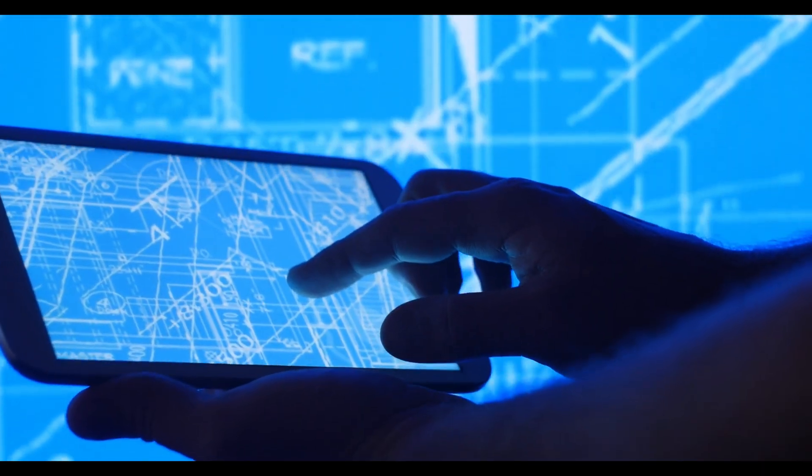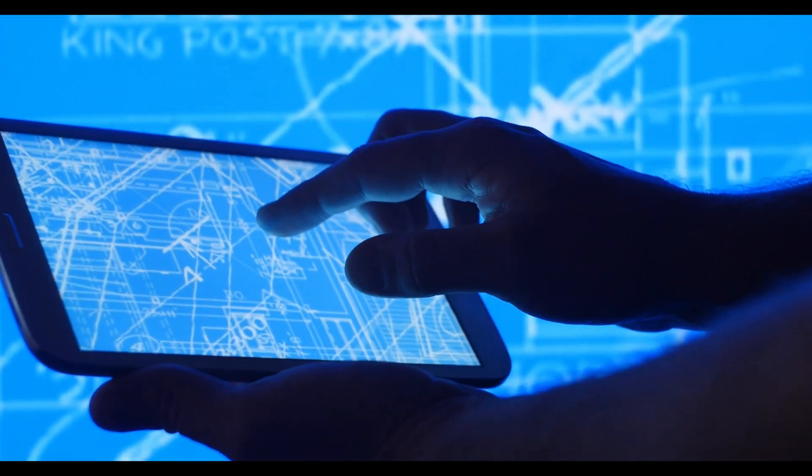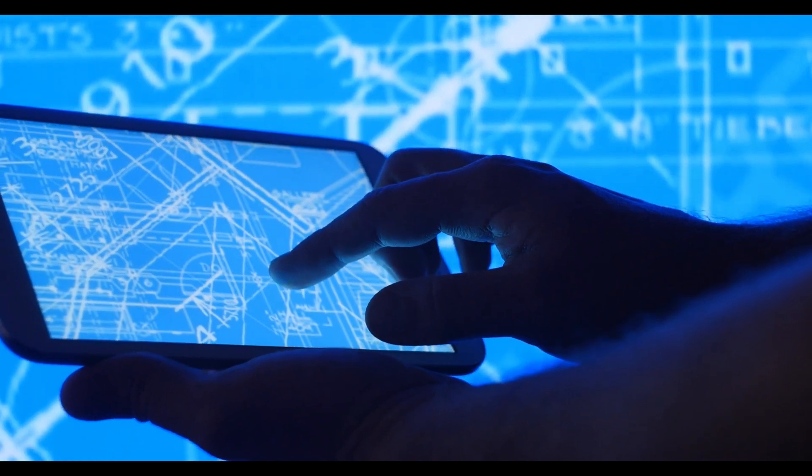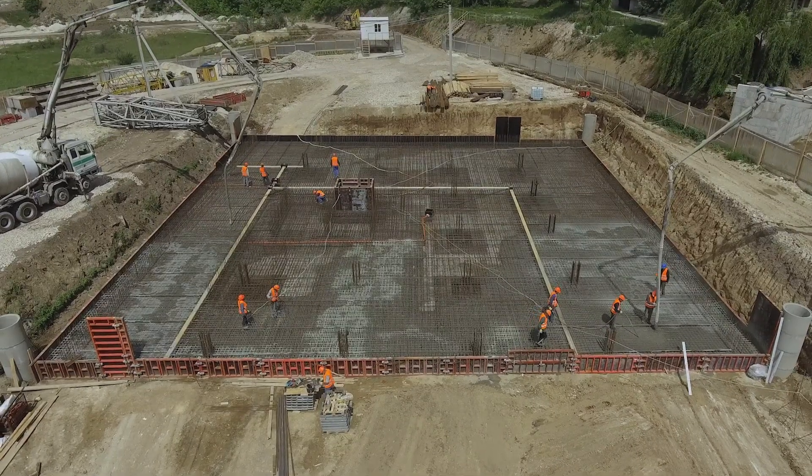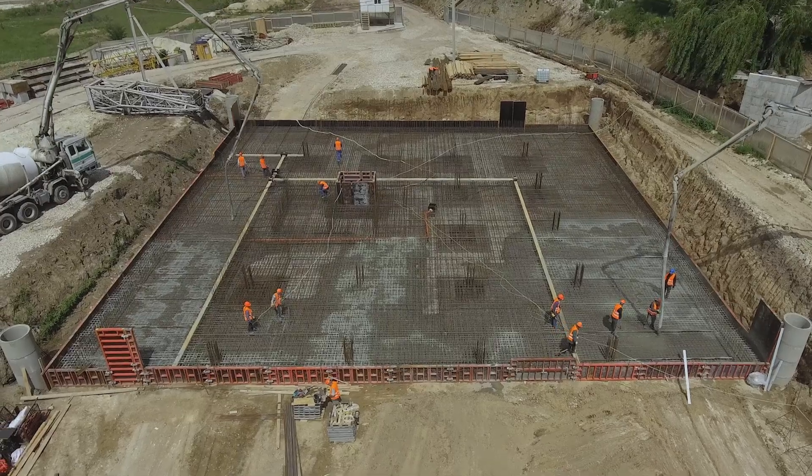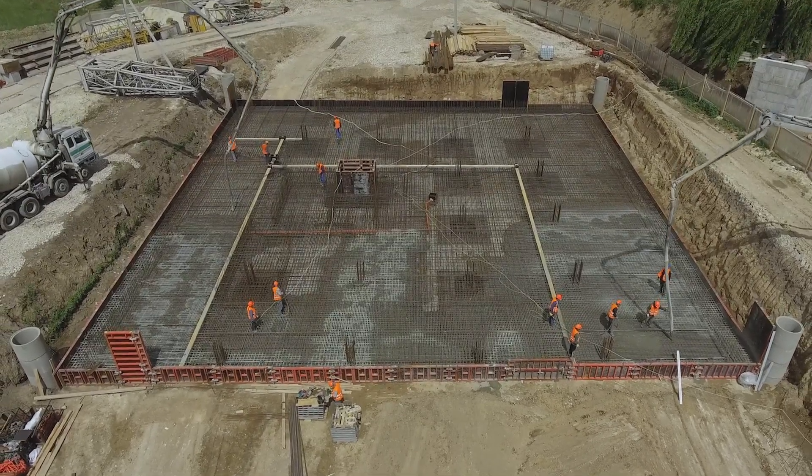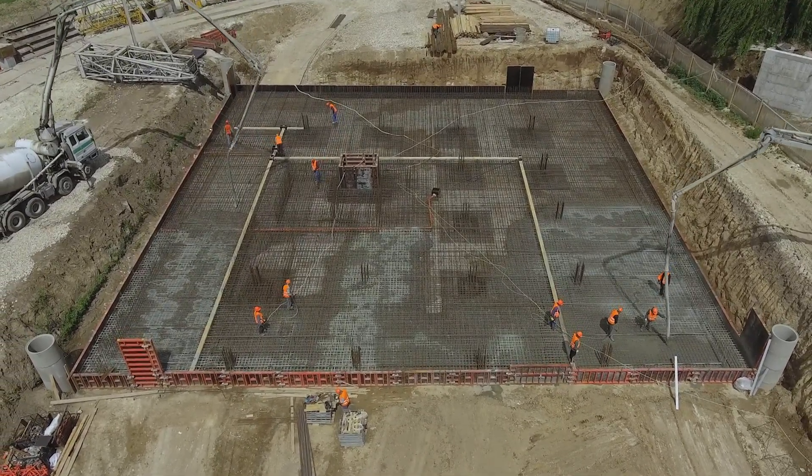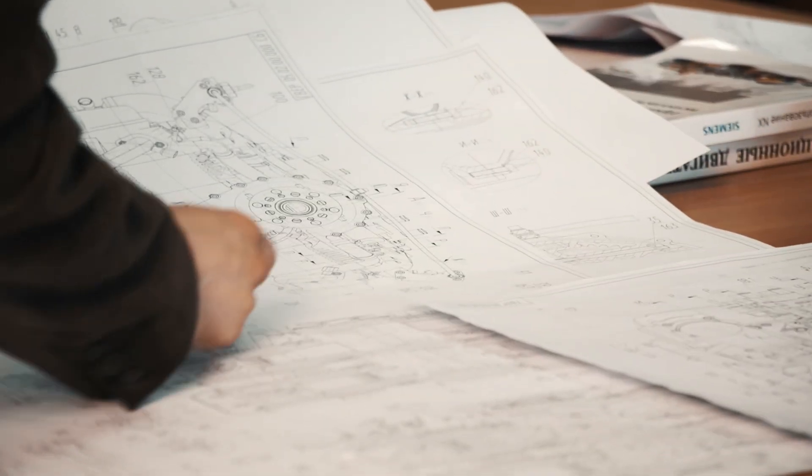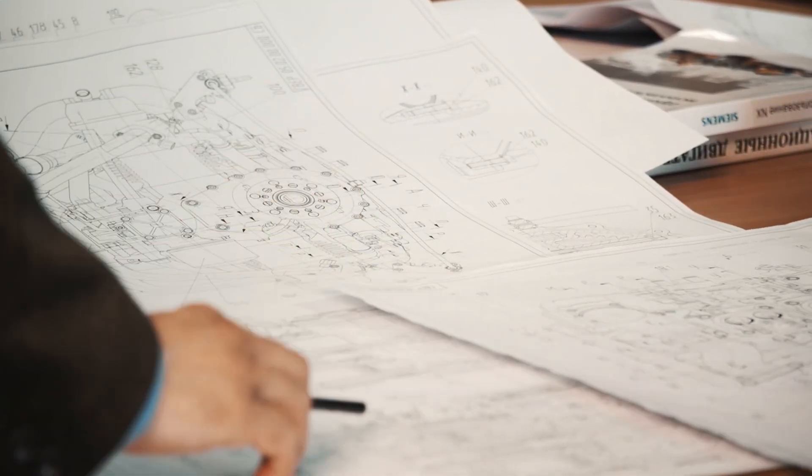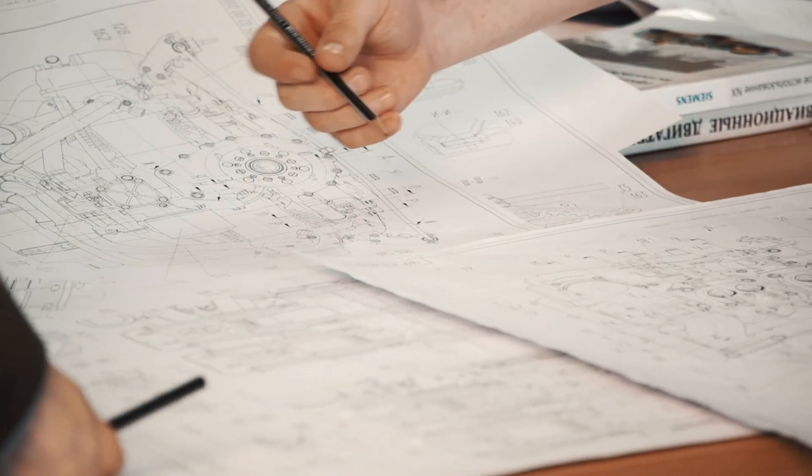Plus, engineers make sure the base of a building is super strong and grippy so it doesn't slide around during a quake. Or, they can even do the complete opposite and put the whole building on sliders or rollers so they can move back and forth during a quake without snapping. All these smart designs help keep everyone inside the building safe when the earth does decide to dance.